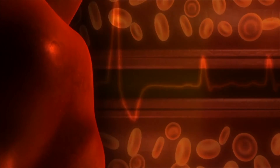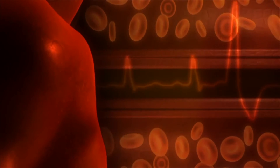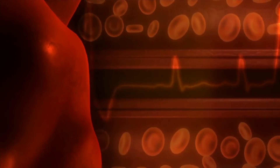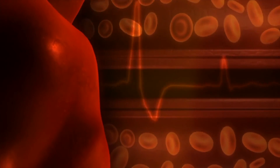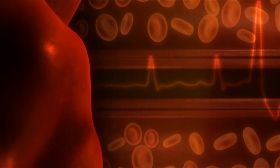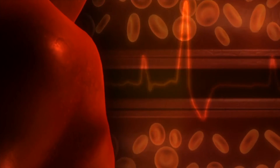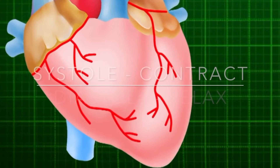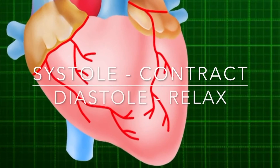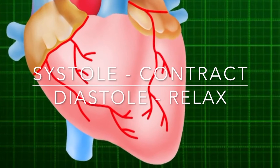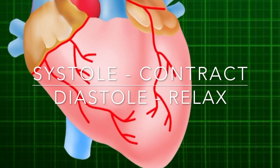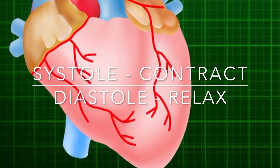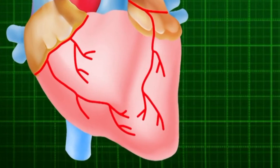Blood must continuously move around the body, collecting and supplying vital substances to cells, as well as removing waste from them. The heart acts as a pump using a combination of systole, which is contraction, and diastole, which is relaxation, of the chambers. This cycle takes place in the following sequence.